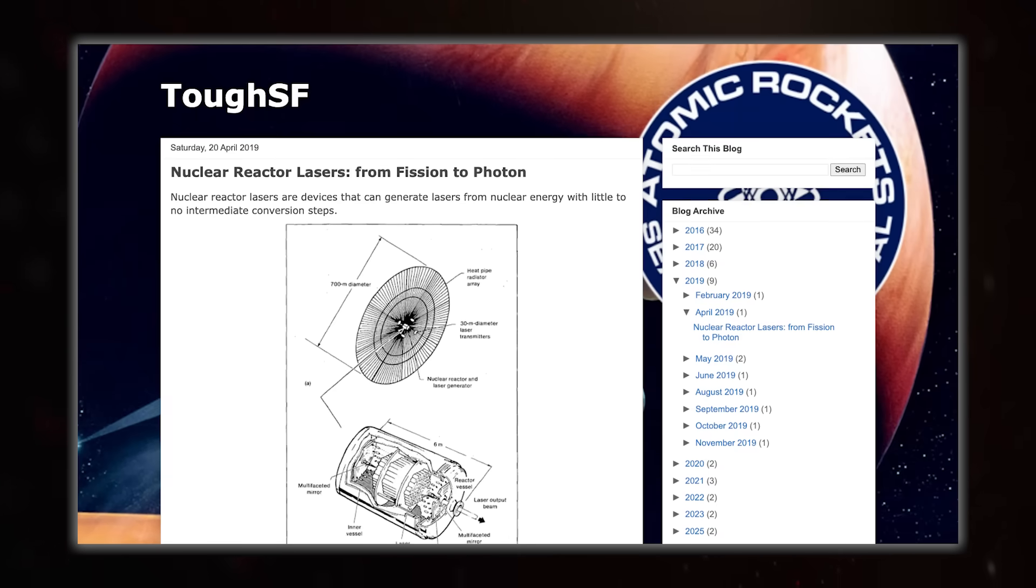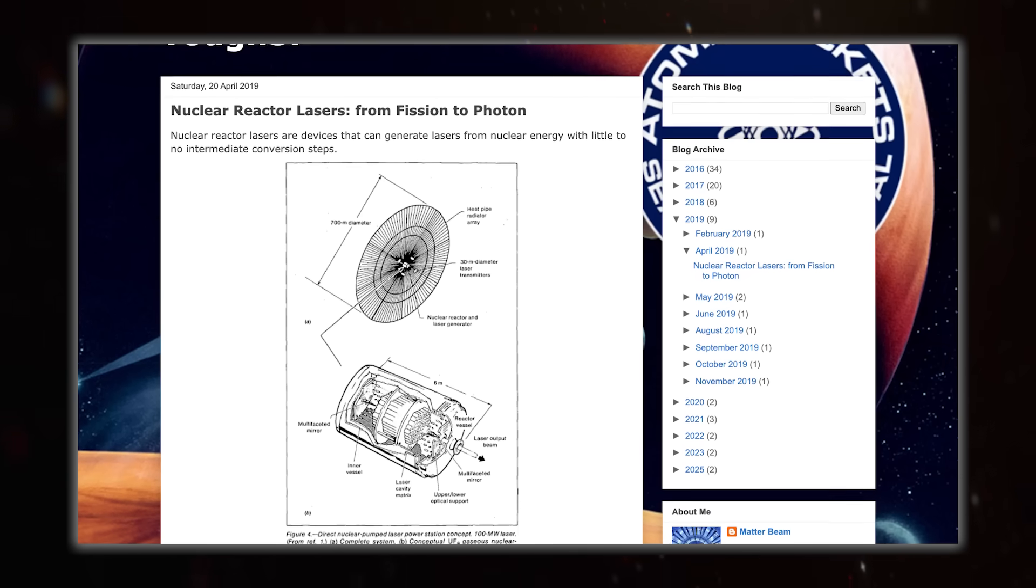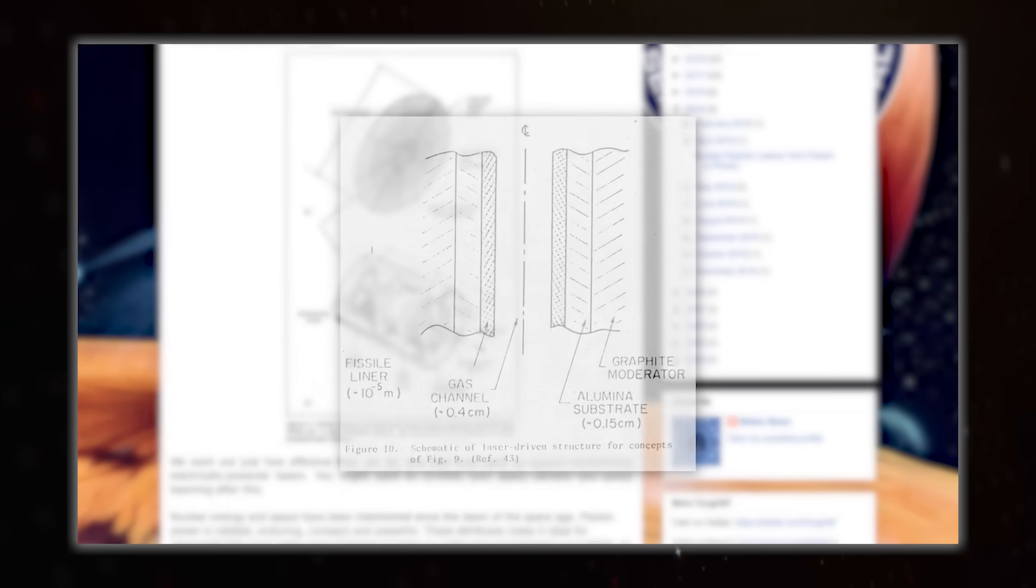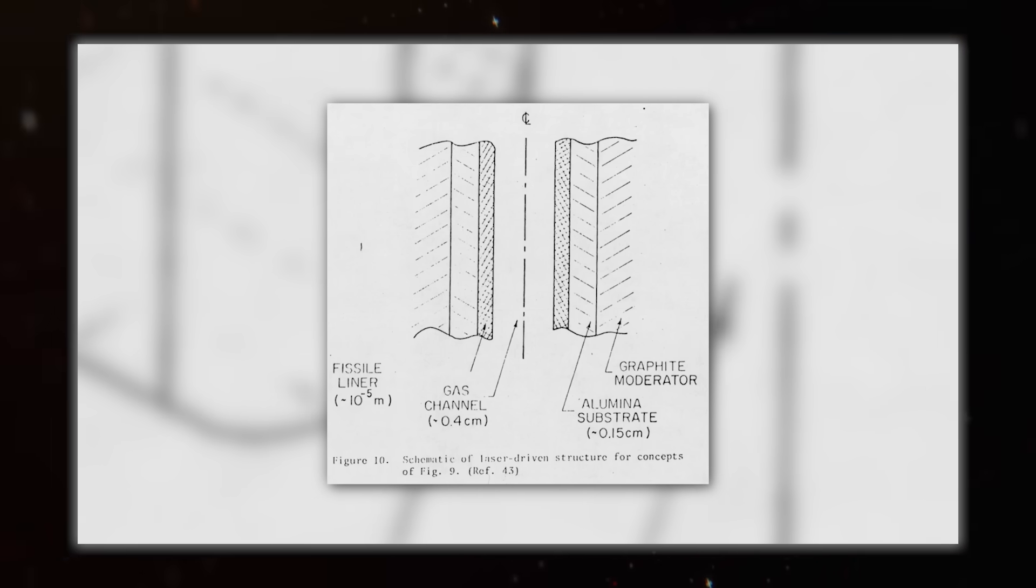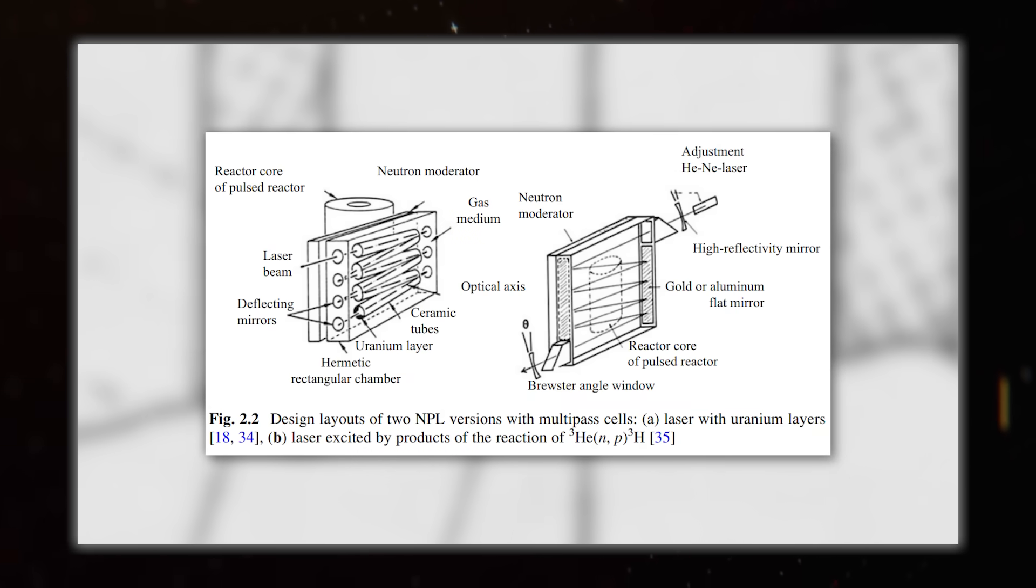First, we're going to start with some methods of getting a laser basically directly out of a nuclear reactor by putting the lazing medium right on in there. One way of doing this is called wall-pumping, where the fission fragments, the bits that come out of an unstable fissionable atom, bump into the atoms of a lazing gas. The fragments then transfer their energy to the lazing medium, which lazes. The problem is that these fragments are these big, heavy things and so can't get very far into the gas, so you need to really maximize the surface area of the reactor with lots of tiny channels through it.